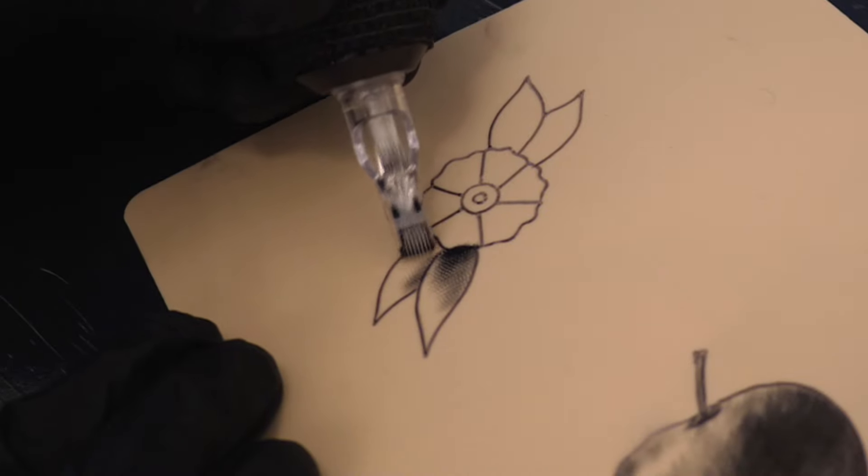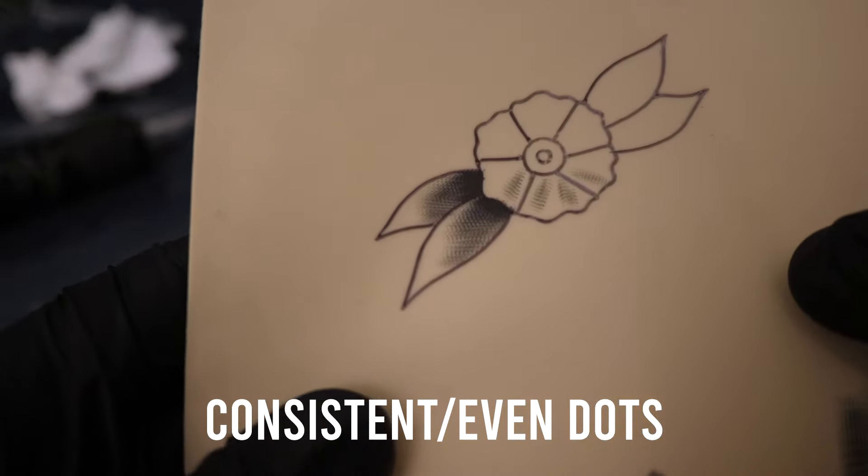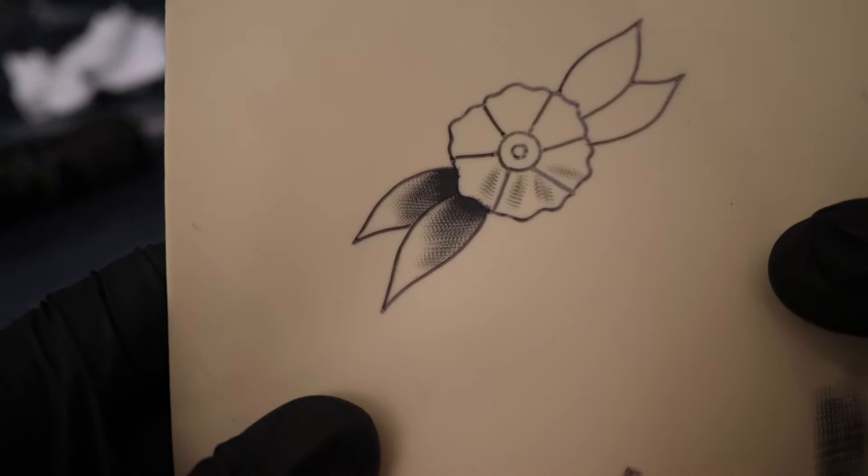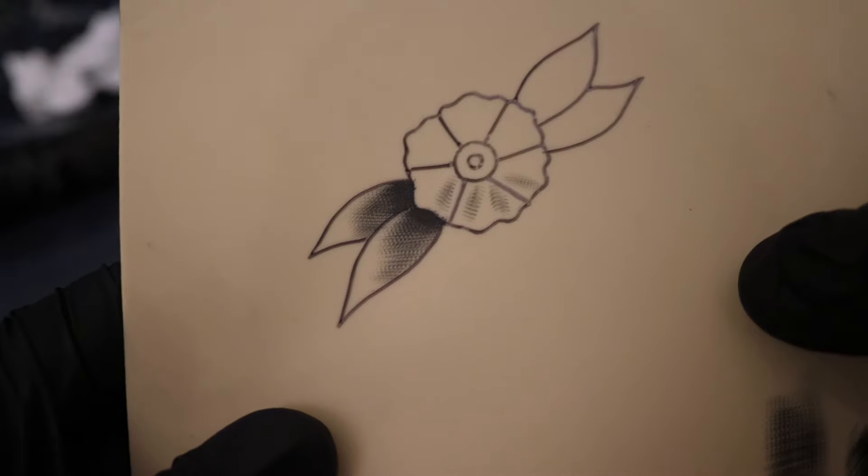This is extremely important so that you don't get lines and inconsistent dots in your shading. You'll be surprised how many artists don't know how to do this. Let me show you what happens if you don't tattoo at an angle.